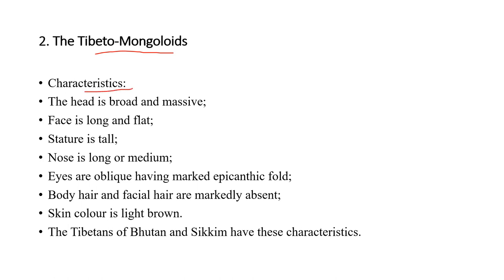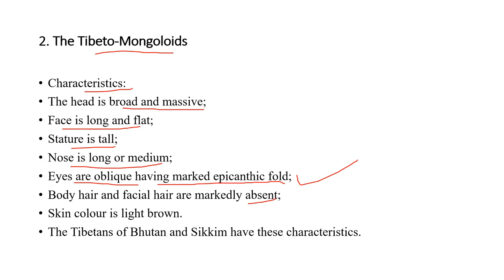Tibeto-Mongoloid characteristics: head is broad and massive, face is long and flat, stature is tall, nose is long and medium, eyes are oblique having marked epicanthic fold — a very common Mongoloid feature — body and facial hair are markedly absent. Skin color is light brown. These are found among Tibetans of Bhutan and Sikkim.